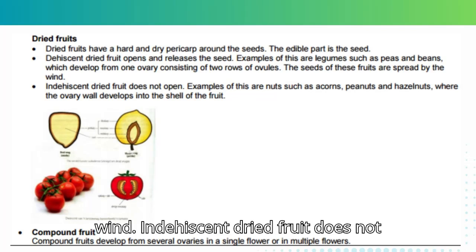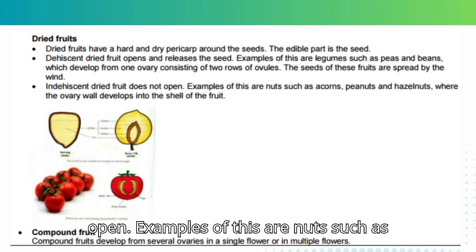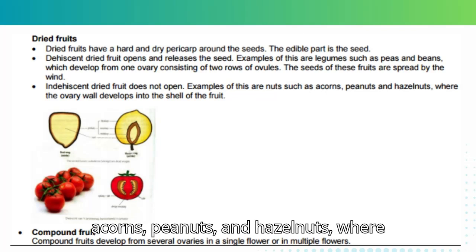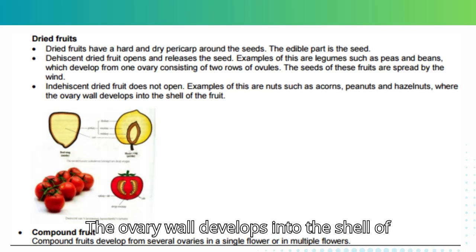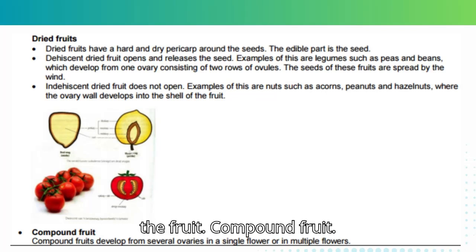Indehiscent dried fruit does not open. Examples of this are nuts such as acorns, peanuts and hazelnuts, where the ovary wall develops into the shell of the fruit.